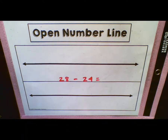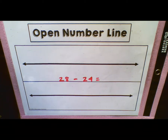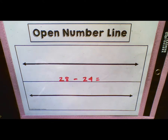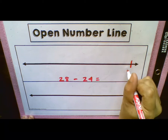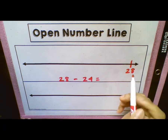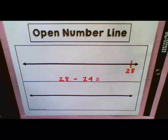So without further ado, let's go ahead. Here we have 28 minus 24. As within the last lesson, we talked about how when we are using the 100s chart to help us subtract, we were going up and then going to the left. Now we don't have the 100s chart here, so we aren't going to be going up, but the same rule applies where we are going to be going to the left. To start a subtraction, we need to write 28 here, because when we subtract we are going backwards towards the left.